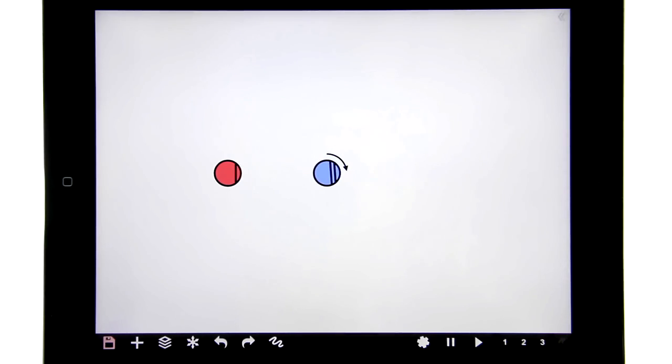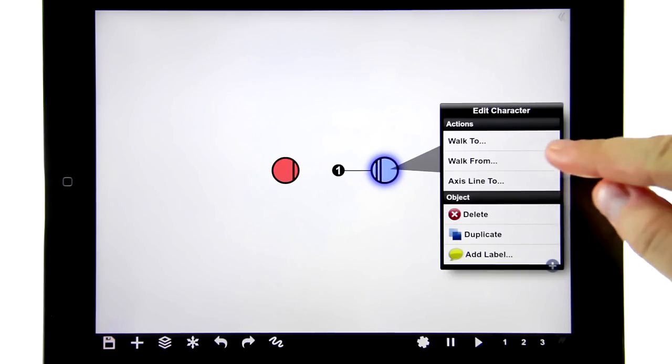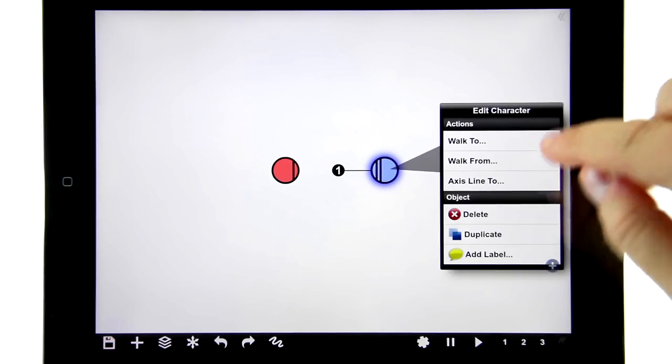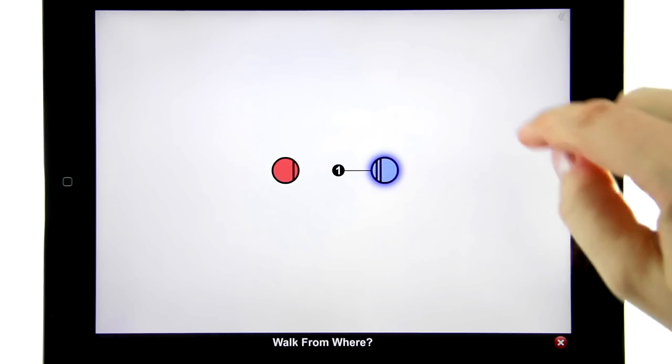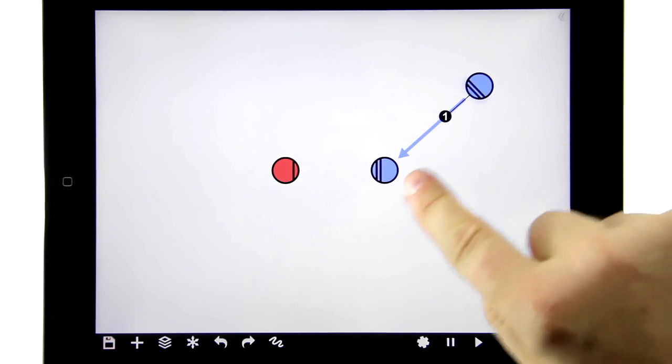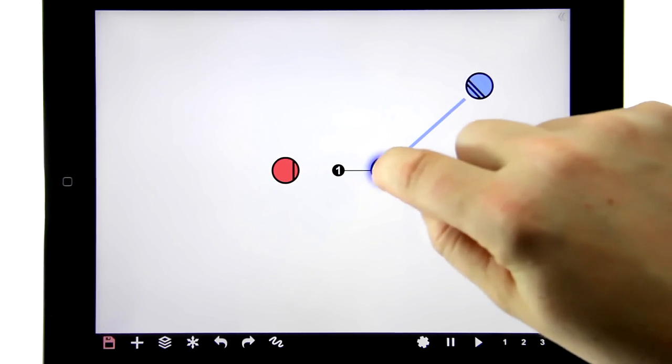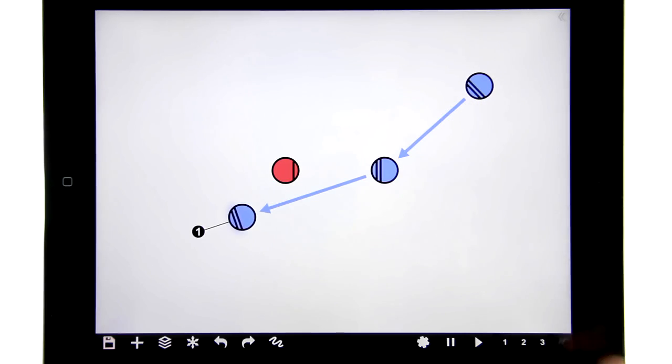To make characters walk, I just tap them and in their menu I have options like walk to and walk from. I'm going to select walk from, and it's going to ask down here walk from where. I'm just going to tap right there. Now she walks from over here. Let's do the other part too. I'm going to say walk to, and she's going to walk over behind the red character.